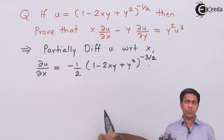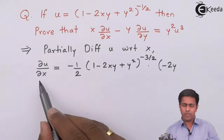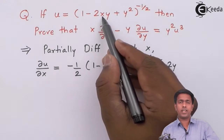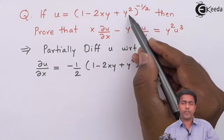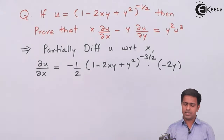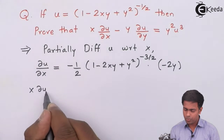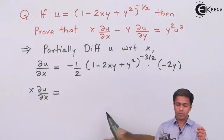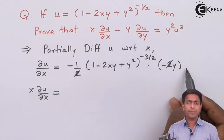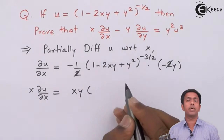For the inner function, differentiation of 1 is 0. For negative 2xy, the minus 2 and y are both constant since we are differentiating with respect to x, and the derivative of x with respect to x is 1. Differentiation of y squared with respect to x is 0. So we get negative 2y. Now we are going to multiply this value with x, giving x ∂u/∂x. Here the 2 and 2 cancel, negative and negative become positive, and multiplying by x gives xy into (1 minus 2xy plus y squared) raised to negative 3/2.